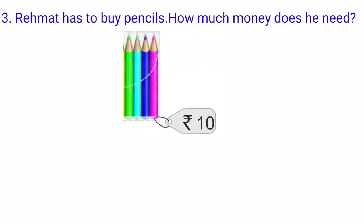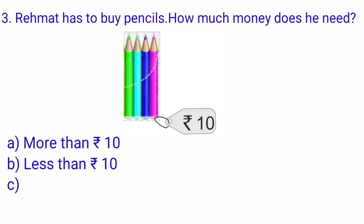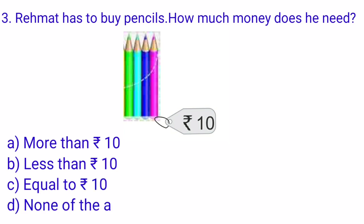Rehmat has to buy pencils. How much money does he need? Option A is more than Rs. 10, option B is less than Rs. 10, option C is equal to Rs. 10, and option D is none of the above. When we visit a shop, we see the price marked on the articles. Here, Rs. 10 is the cost marked on the pencils, so Rehmat needs Rs. 10. Option C, equal to Rs. 10, is the right option, and we will put a tick mark at option C.